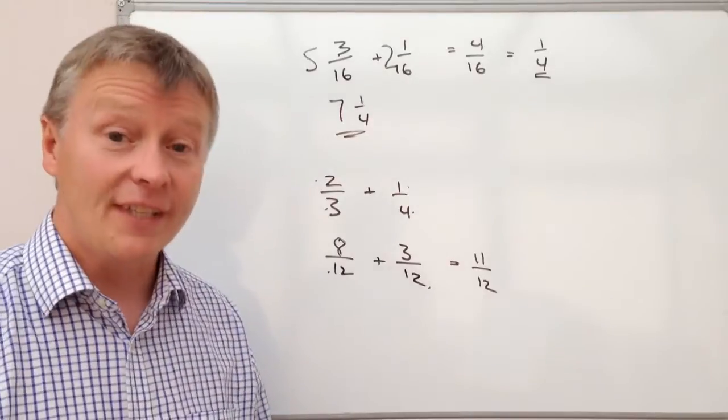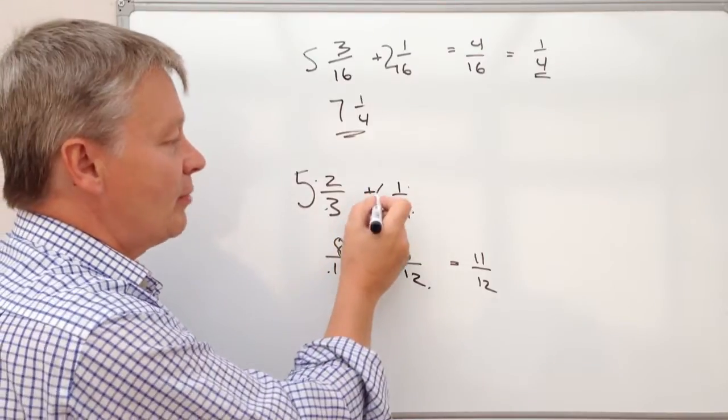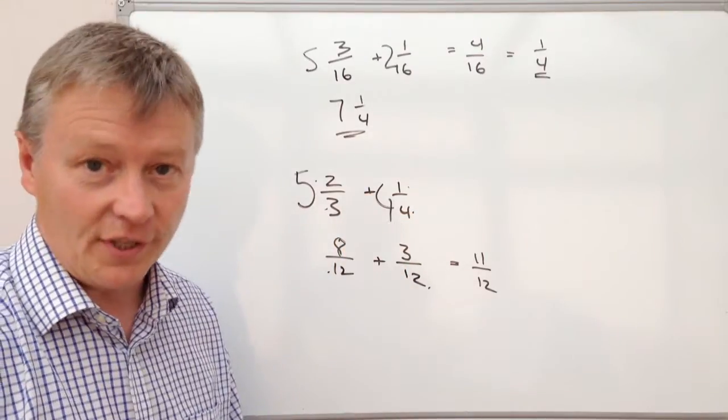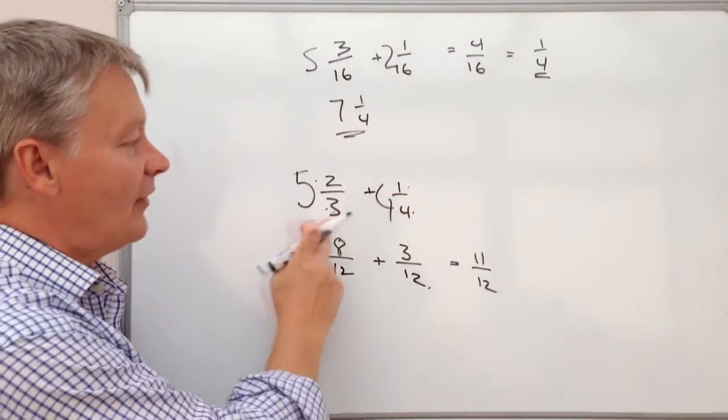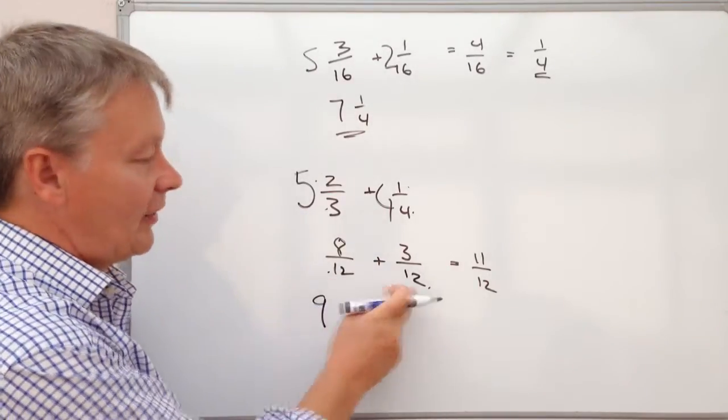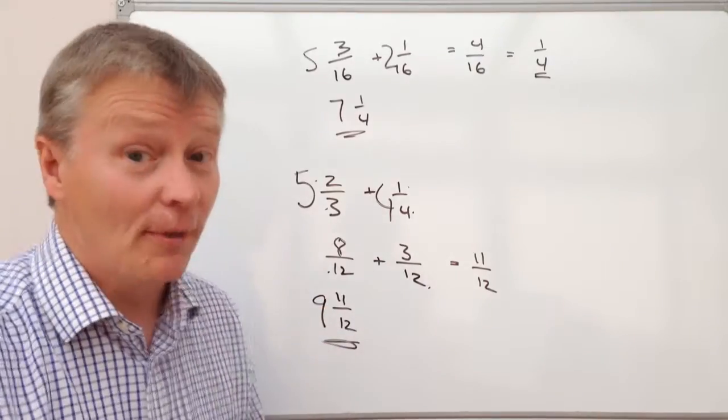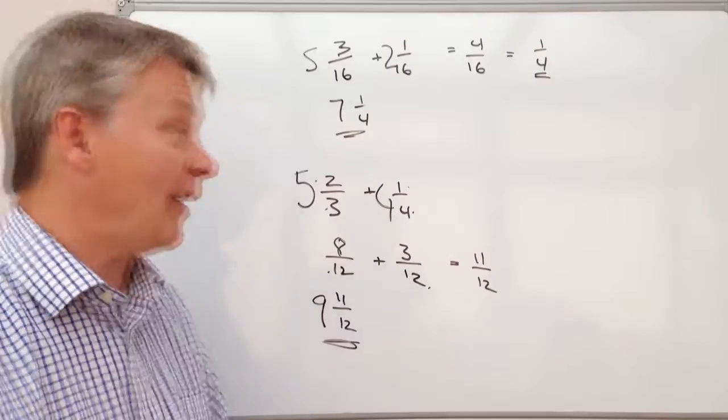Now in terms of a typical exam paper, you're probably going to get something like 5 and 2/3 plus 4 and 1/4. Well the way to do that, add the two integers together and you get 9, add the two fractions together and you get 11/12. That's pretty much all there is to adding fractions.